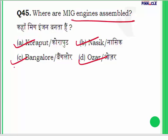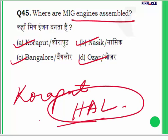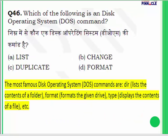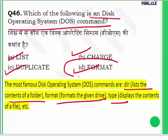Question 45: Where are MiG engines assembled — Koraput, Nashik, Bangalore, or Ozar? The answer is Koraput. Hindustan Aeronautics Limited (HAL) is located there, and MiG engines are assembled in Koraput. Question 46: Which of the following is a Disk Operating System (DOS) command — List, Change, Duplicate, or Format? The most famous DOS commands include DIR, which lists folder contents, and FORMAT, which formats a given drive. The answer for question 46 is D — Format.